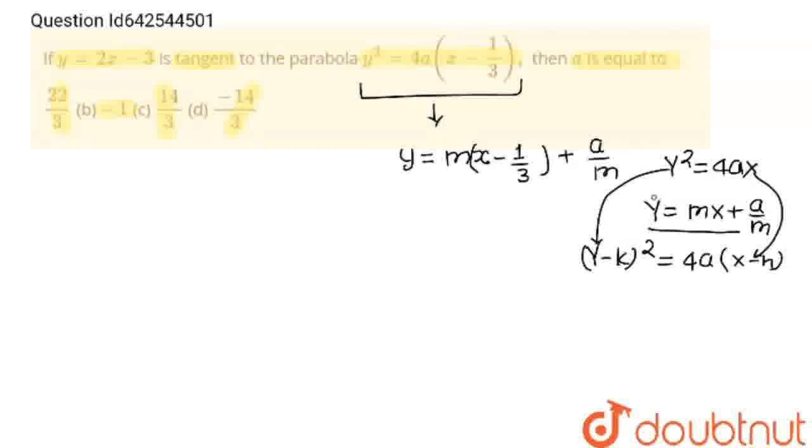So in this tangent formula, we'll replace y with y - k and x with x - h. Here we have x - 1/3, so this y remains unchanged and at place of x, I just wrote x - 1/3 like this.